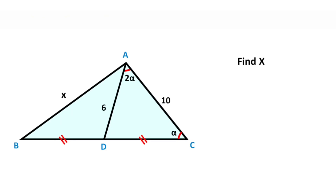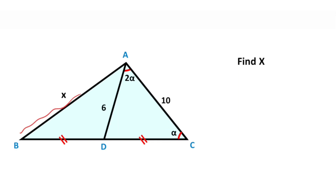Hello everyone. In this video we have one triangle where these two parts are given as equal. Here is given 6, this length is given 10, and the ratio of these two angles is given as 2. The question is: what is the length of x?